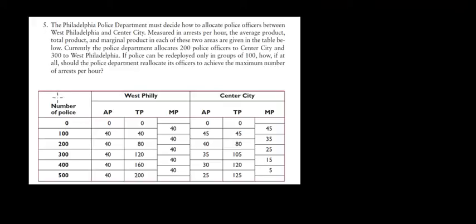Let's have a look at question 5 in this video. We have the Philadelphia Police Department and they must decide how to allocate police officers between West Philadelphia and Center City. We measure the productivity of the police in arrests per hour. We have the data with the average product, total product, and marginal product. We want to know how this department should allocate their police officers optimally — putting officers where they arrest the most and reduce crime the most.